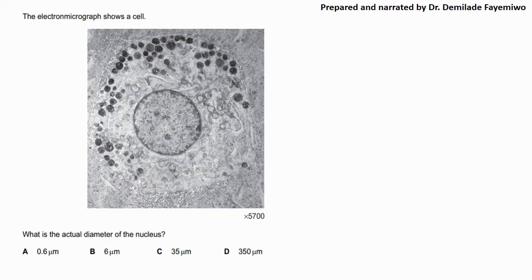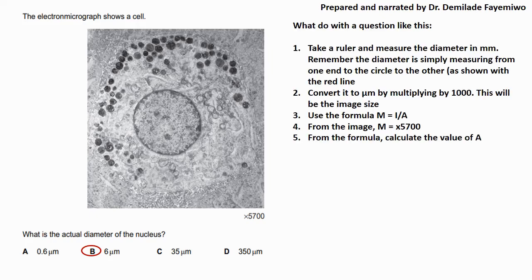The second question says the electron micrograph shows a cell and it says what is the actual diameter of the nucleus. Now if you look at this video you will see that there are some dark dots in the midst of that drawing or of this micrograph rather. Those dark dots are actually part of the cell. So if you look at it very closely you will see that this is an animal cell and it has a circular membrane that is around the dark dots that you see. In the center you can see the nucleus which is stained.